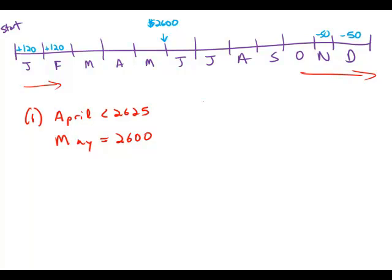Well, if we subtracted 50, there'd be no way that we could start at $2,625 and end up at $2,600. So we know for a fact that what had to happen at the 15th of May is that we added $120. So that's interesting. So that means that for at least the first five months of the year, we're adding $120.